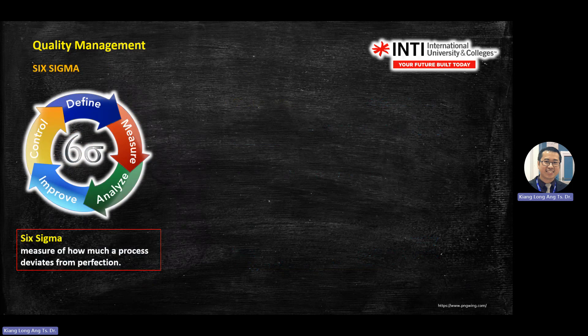Another concept is Six Sigma — a quality control tool used by most large multinational companies today. The most famous example is Motorola, the first company to implement Six Sigma. It was developed and used by Motorola, and then Six Sigma grew into other industries.